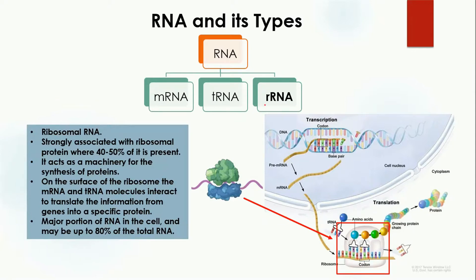The last type of RNA is rRNA, where 'r' stands for ribosomal. Ribosomal RNA is strongly associated with ribosomal proteins, where 40 to 50 percent of the ribosome is rRNA. It acts as machinery for the synthesis of protein. Here you can see the ribosomal RNA is the part to which messenger RNA and transfer RNA bind to help in the translation and production of protein on the surface of the ribosome.